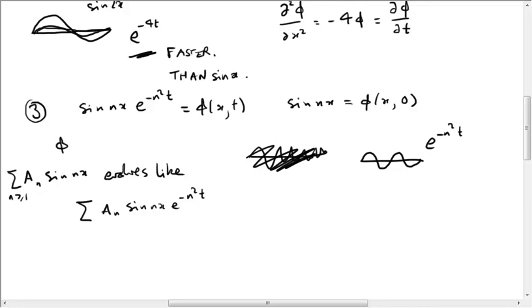So in other words, if phi of x comma 0 equals this, sum of sine nx with coefficients a_n, then phi x,t, the general solution for this initial condition, is going to be the corresponding sum of sine nx e to the minus n squared t. But what is this? This is a Fourier expansion. So let me put a star here. So star is a Fourier expansion.